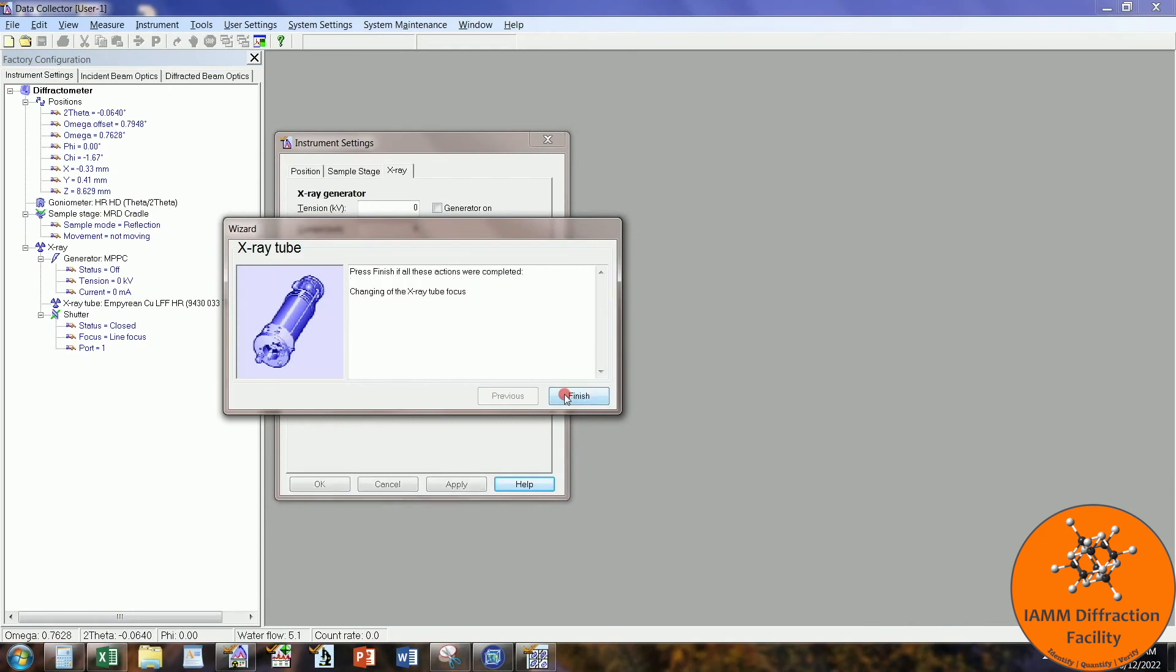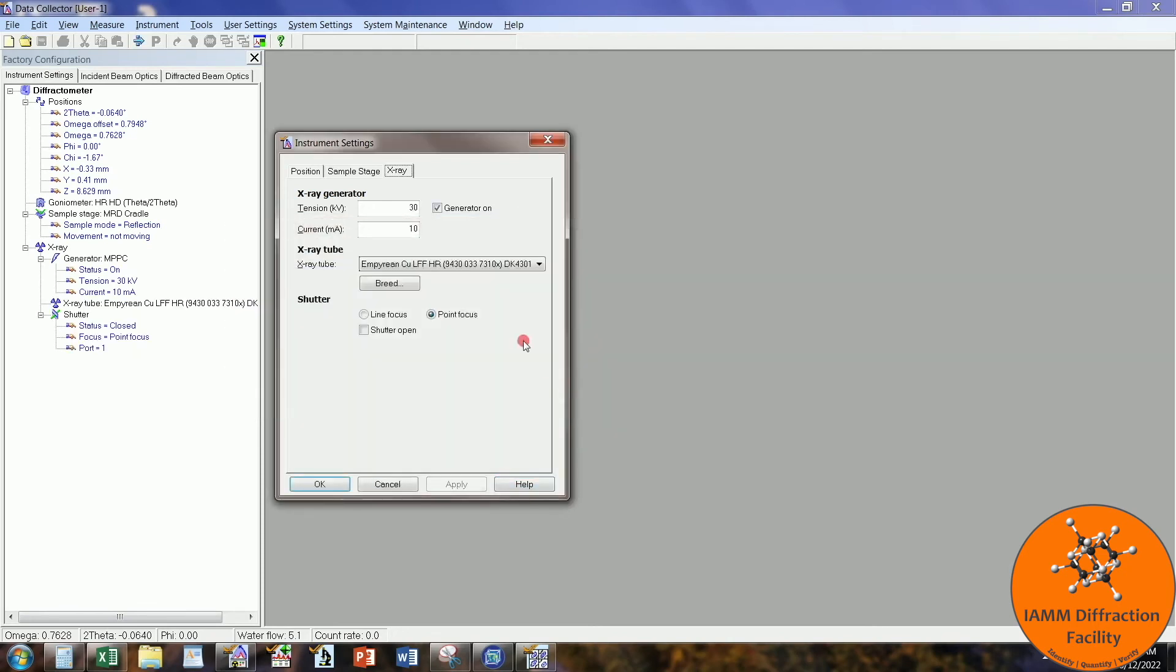We can click next on the screen. And then you can turn your tension and current up to 45 and 40. And then you are good to go in your point focus mode.